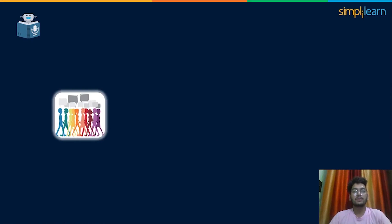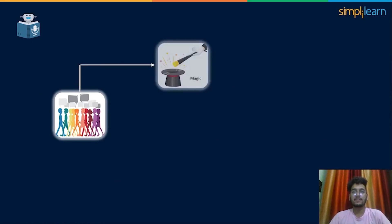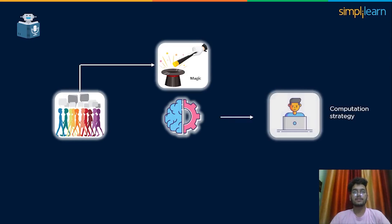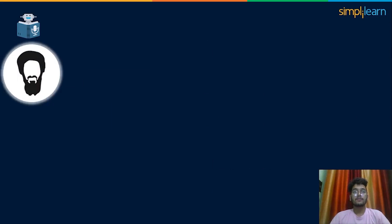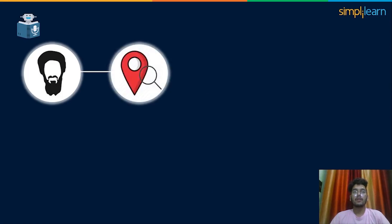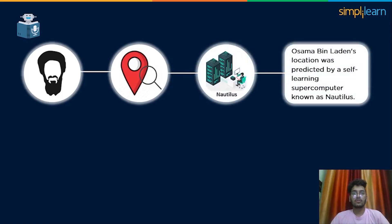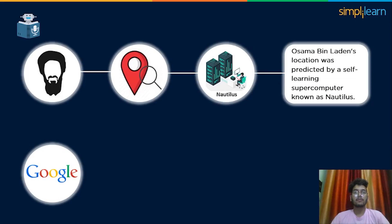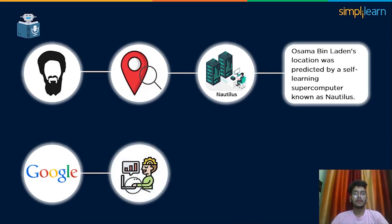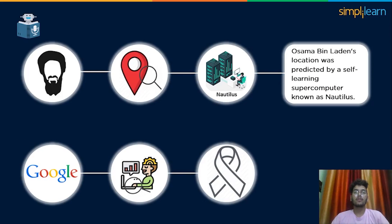Many people who hear about machine learning often think of it as magic. Hey everyone, my name is Mayan. In this video, we will learn what machine learning is and how it is more of a computation strategy than some out-of-the-box magic. Do you know Osama bin Laden's location was predicted by a self-learning supercomputer known as Nautilus? Also, Google's deep learning machine learning program can detect breast cancer with an accuracy of 89%.